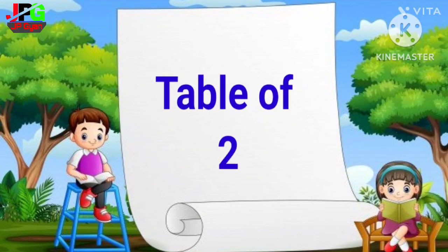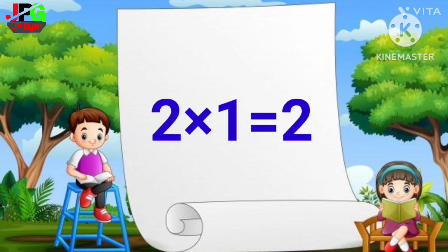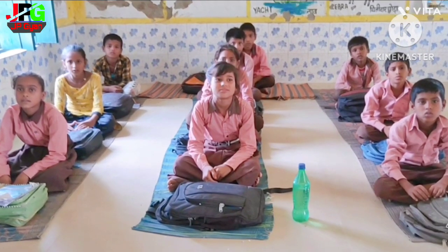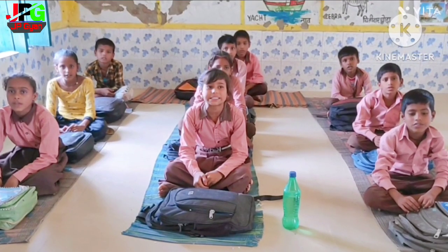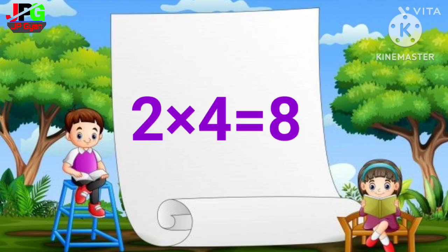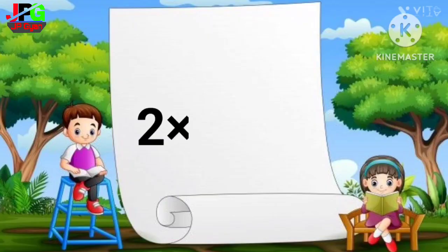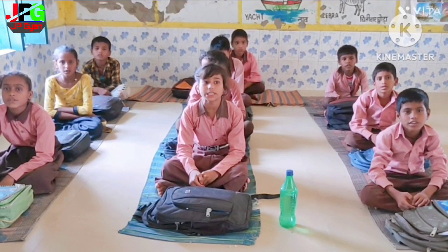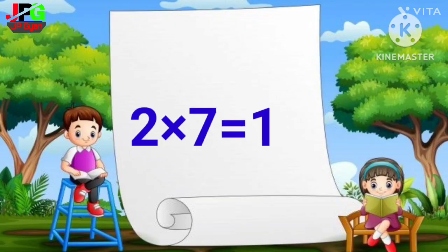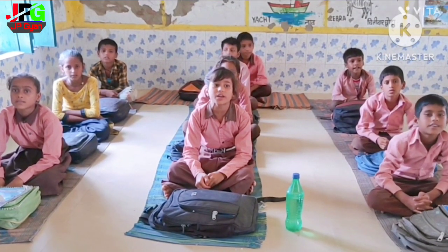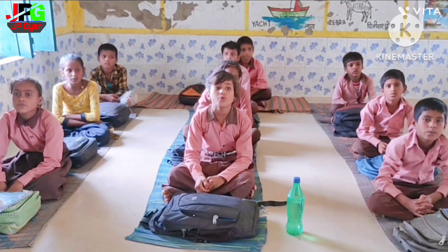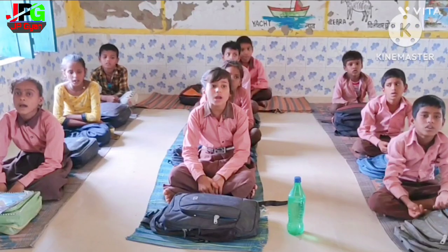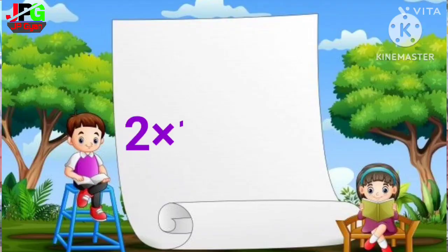Today we learn table of 2. 2 1s are 2, 2 2s are 4, 2 3s are 6, 2 4s are 8, 2 5s are 10, 2 6s are 12, 2 7s are 14, 2 8s are 16, 2 9s are 18, 2 10s are 20.